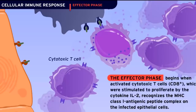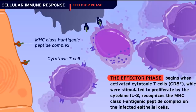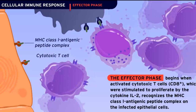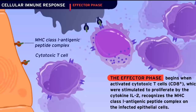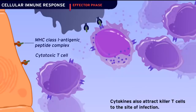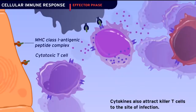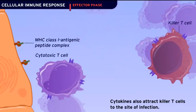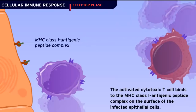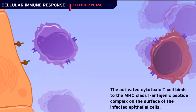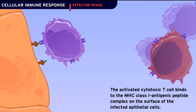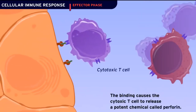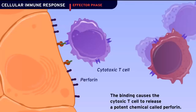The effector phase begins when activated cytotoxic T cells, CD8+, which were stimulated to proliferate by the cytokine IL-2, recognize the MHC class I antigenic peptide complex on the infected epithelial cells. Cytokines also attract killer T cells to the site of infection. The activated cytotoxic T cell binds to the MHC class I antigenic peptide complex on the surface of the infected epithelial cells.